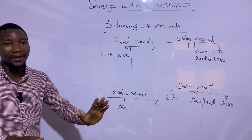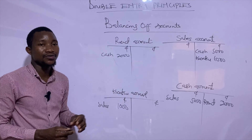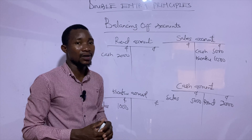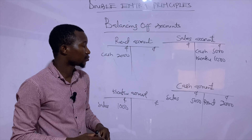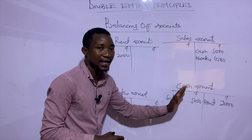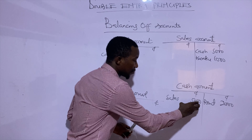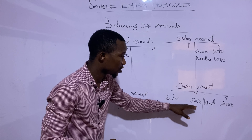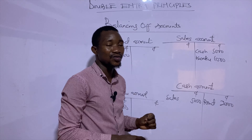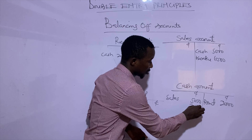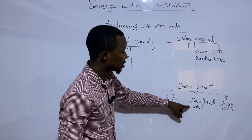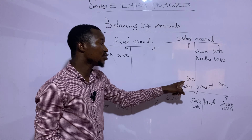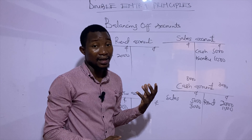After balancing off the accounts, we use the balancing figures to prepare the trial balance. In balancing an account, there are four basic steps. Let's use the cash account to demonstrate. The first step is to sum up the debit side and the credit side of the account. For the cash account, we have 5,000 on the debit side and 2,000 on the credit side. The second step is to choose the bigger side or the bigger total as the total for both sides — so 5,000 becomes the total.